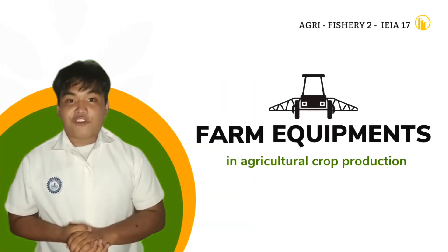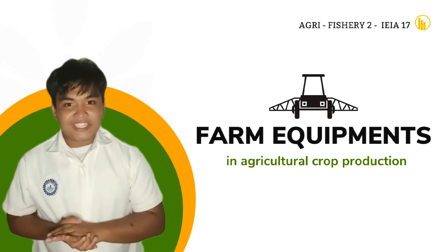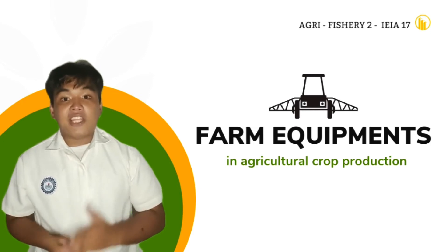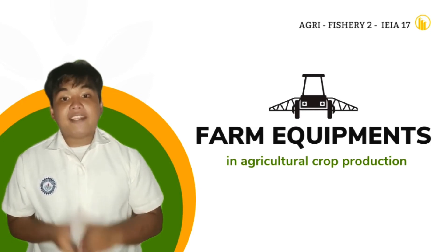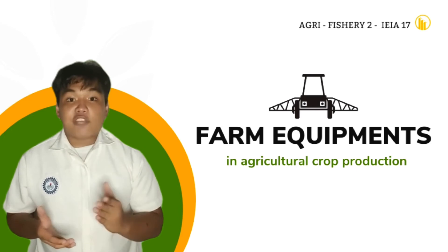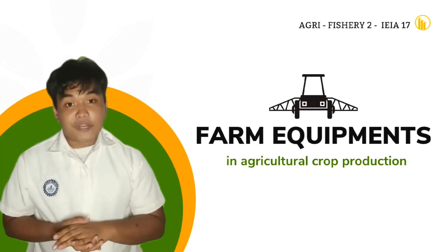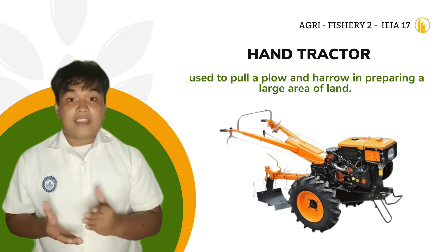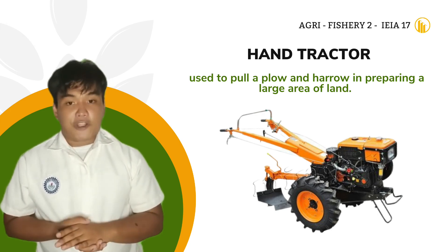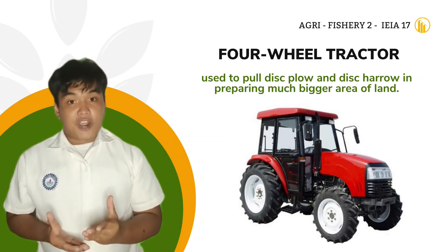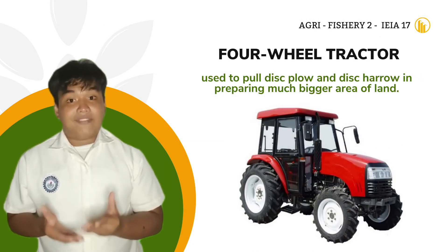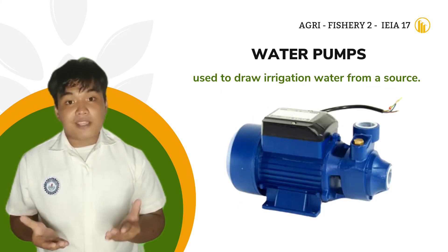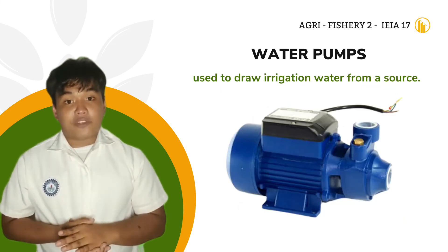And last, Common Farm Equipment. These are machineries used in horticultural operation, especially in vegetable production. They are used in land preparation and in transporting farm inputs and products. This equipment needs a highly skilled operator to use. These are: Hand Tractor — used to pull a plow and harrow in preparing a large area of land. Four-Wheel Tractor — used to pull a plow and harrow in preparing a much bigger area of land. Water Pump — used to draw irrigation water from a source.